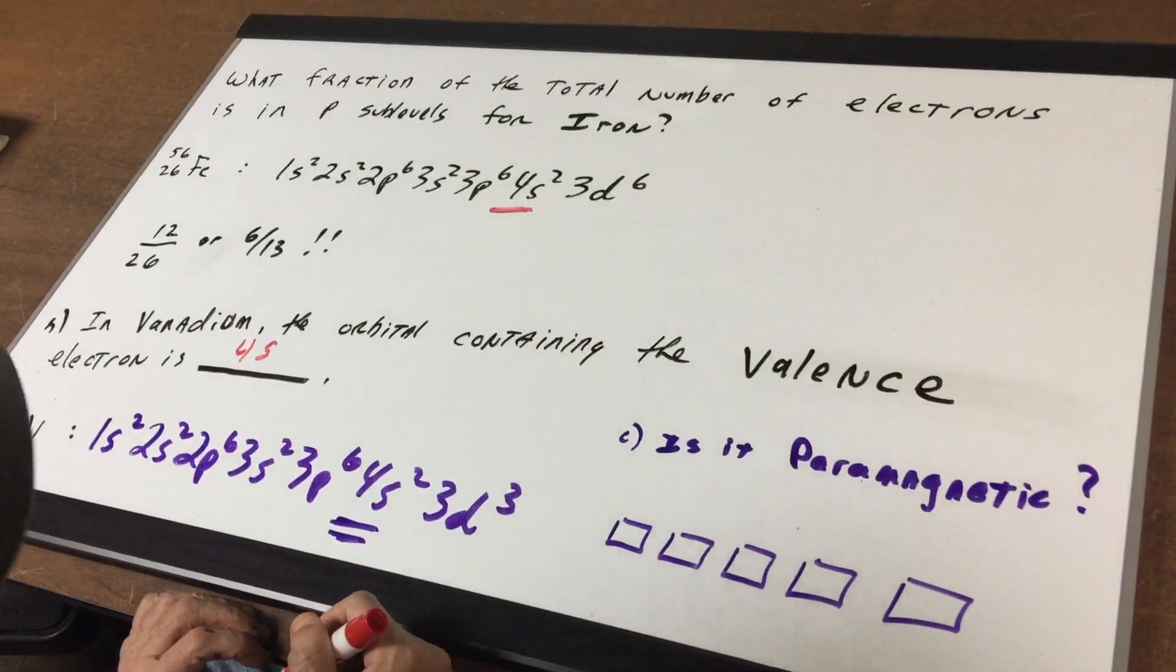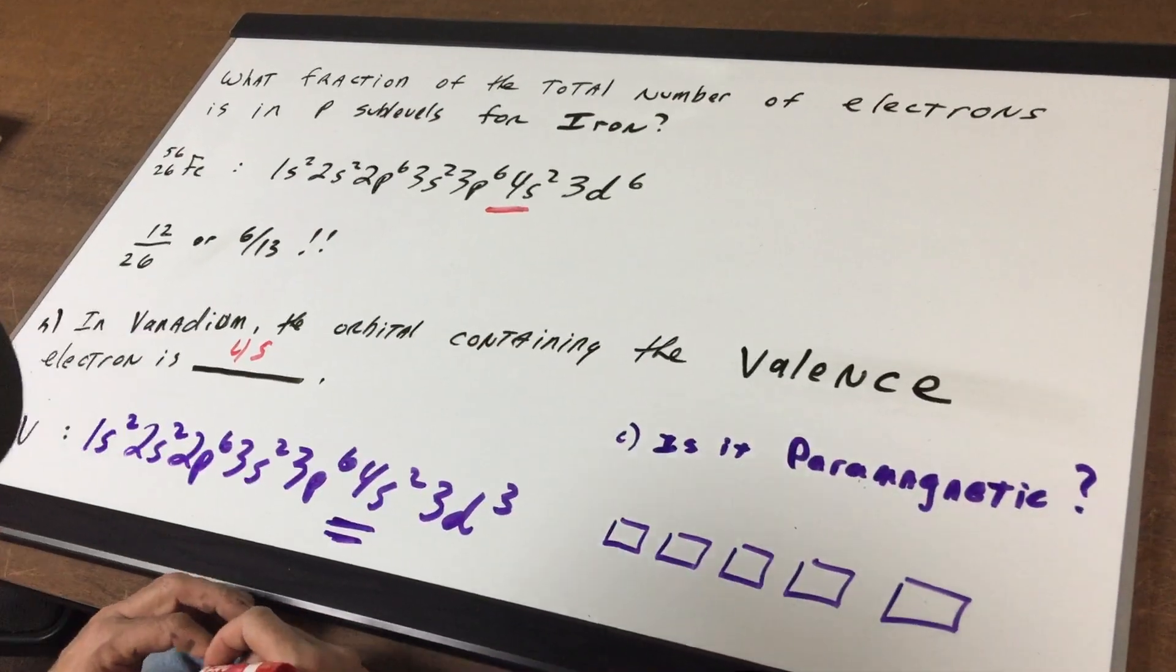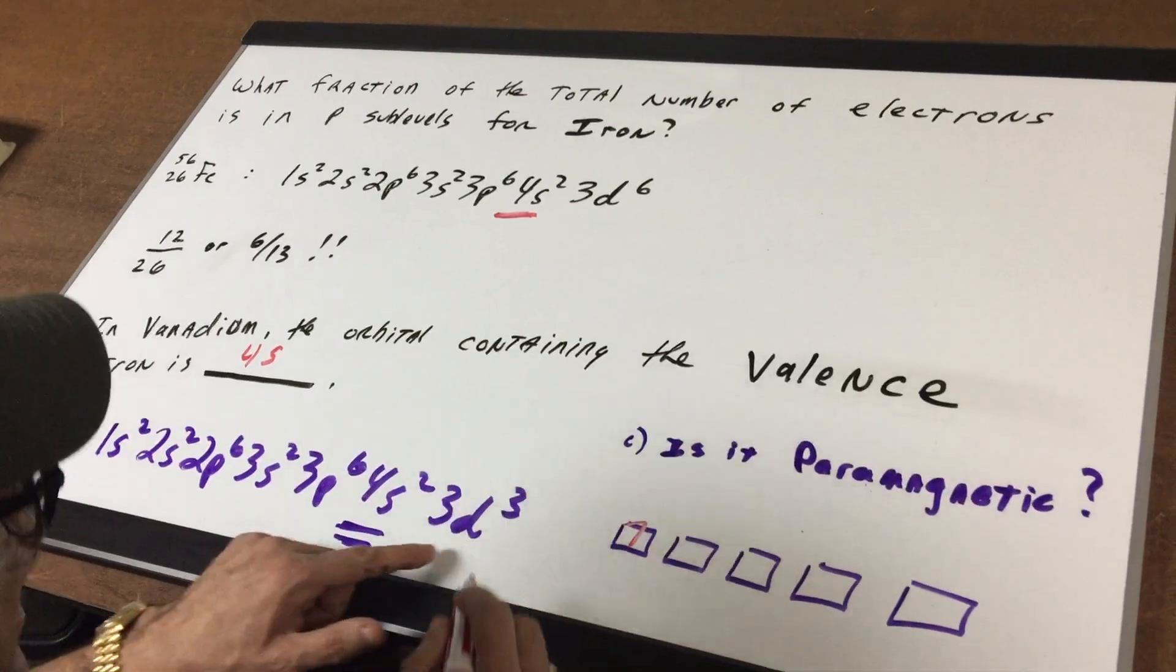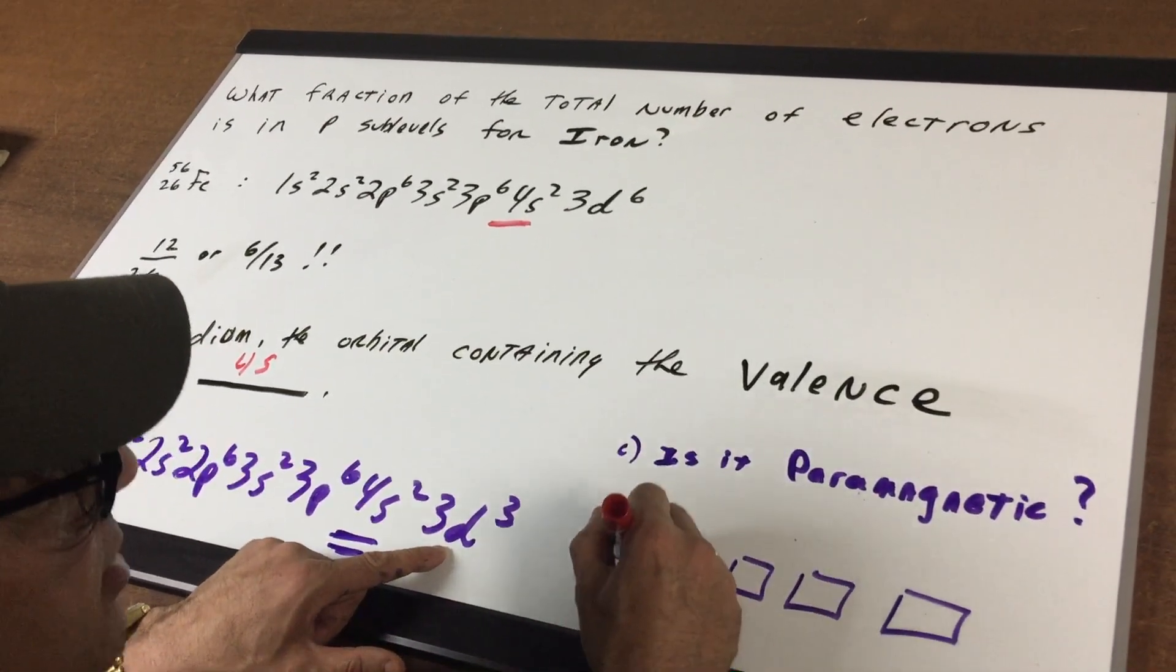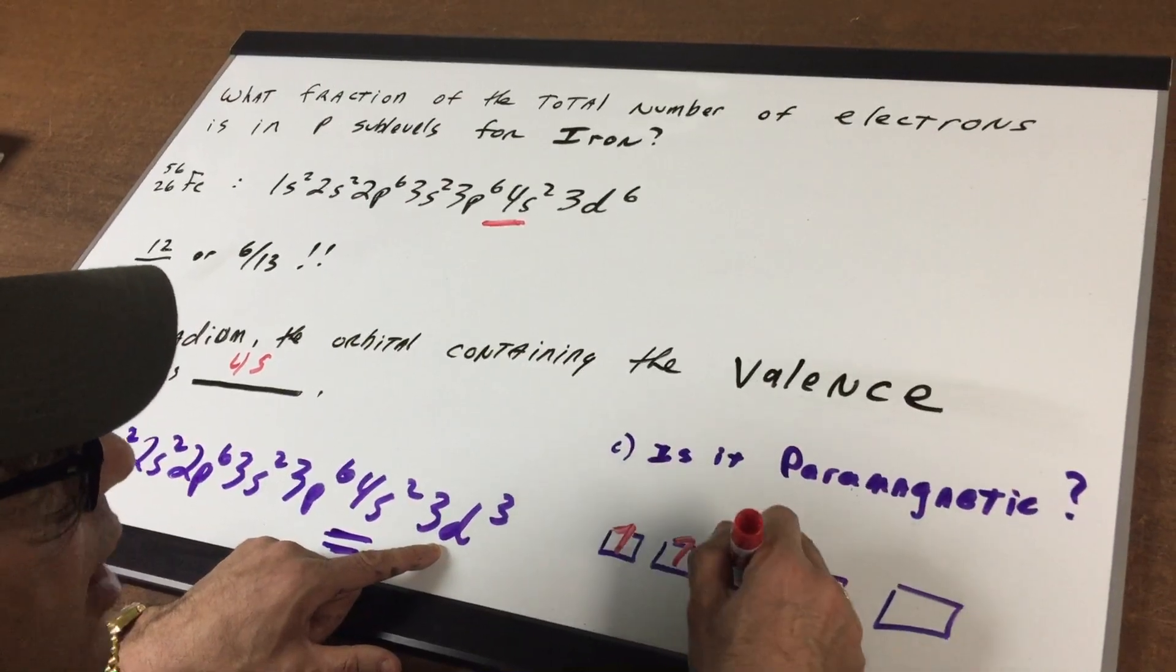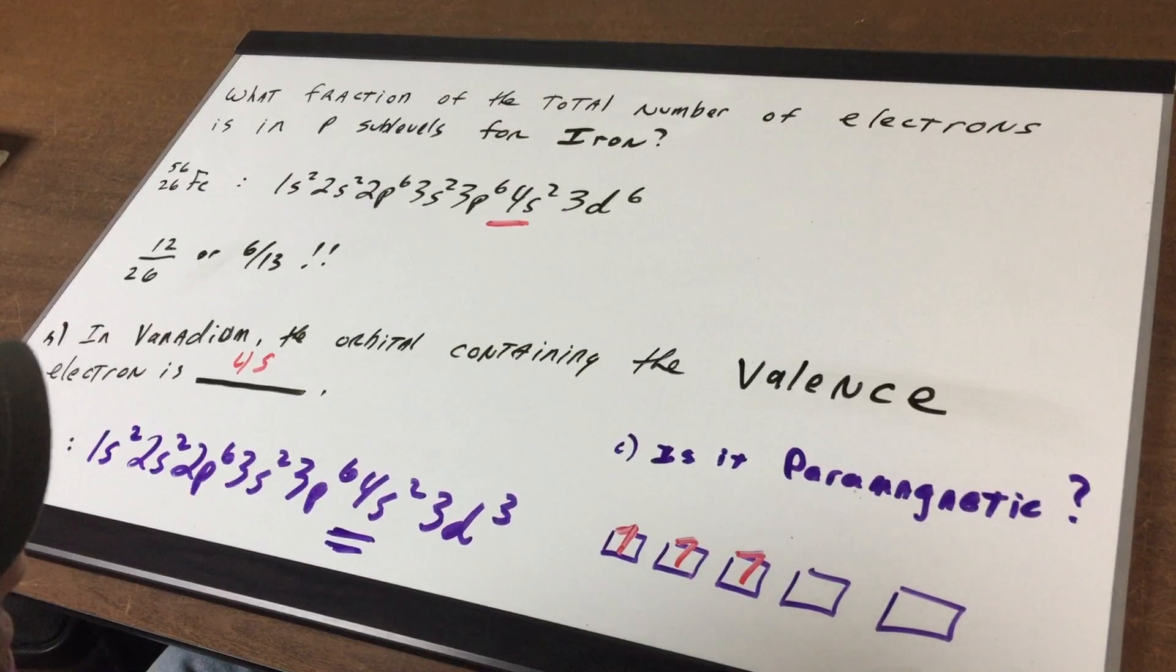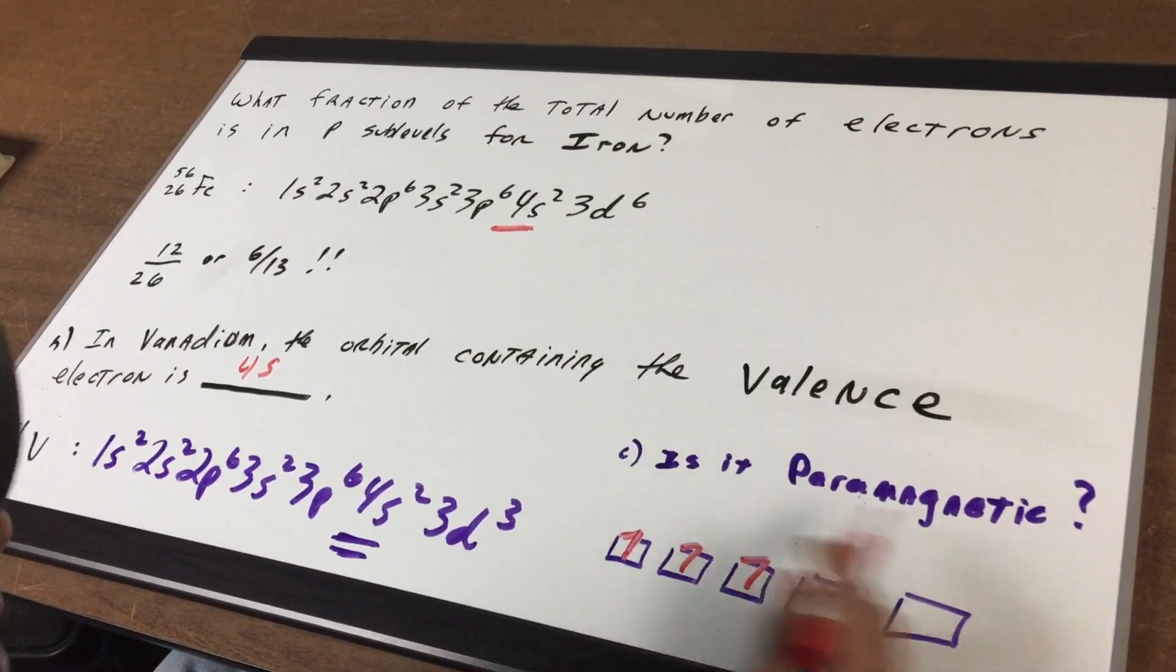Finally, is it paramagnetic? Paramagnetic materials are slightly magnetic if there's unpaired electrons. Do we see any unpaired electrons? Well it ends in a d3. There are 5 d orbitals so I'm going to place one in each using Hund's rule and as you can see there are indeed unpaired electrons. So when the electrons are unpaired it's paramagnetic.